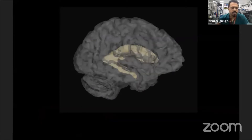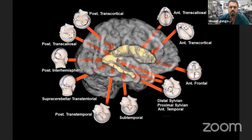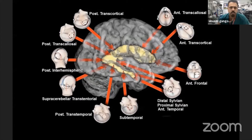But most of these techniques are not always necessary if you know the anatomy. For example, for ventricular tumors, if you know the anatomy of the white matter tracks, you don't need functional MRI, intraoperative direct stimulation, and tractography.